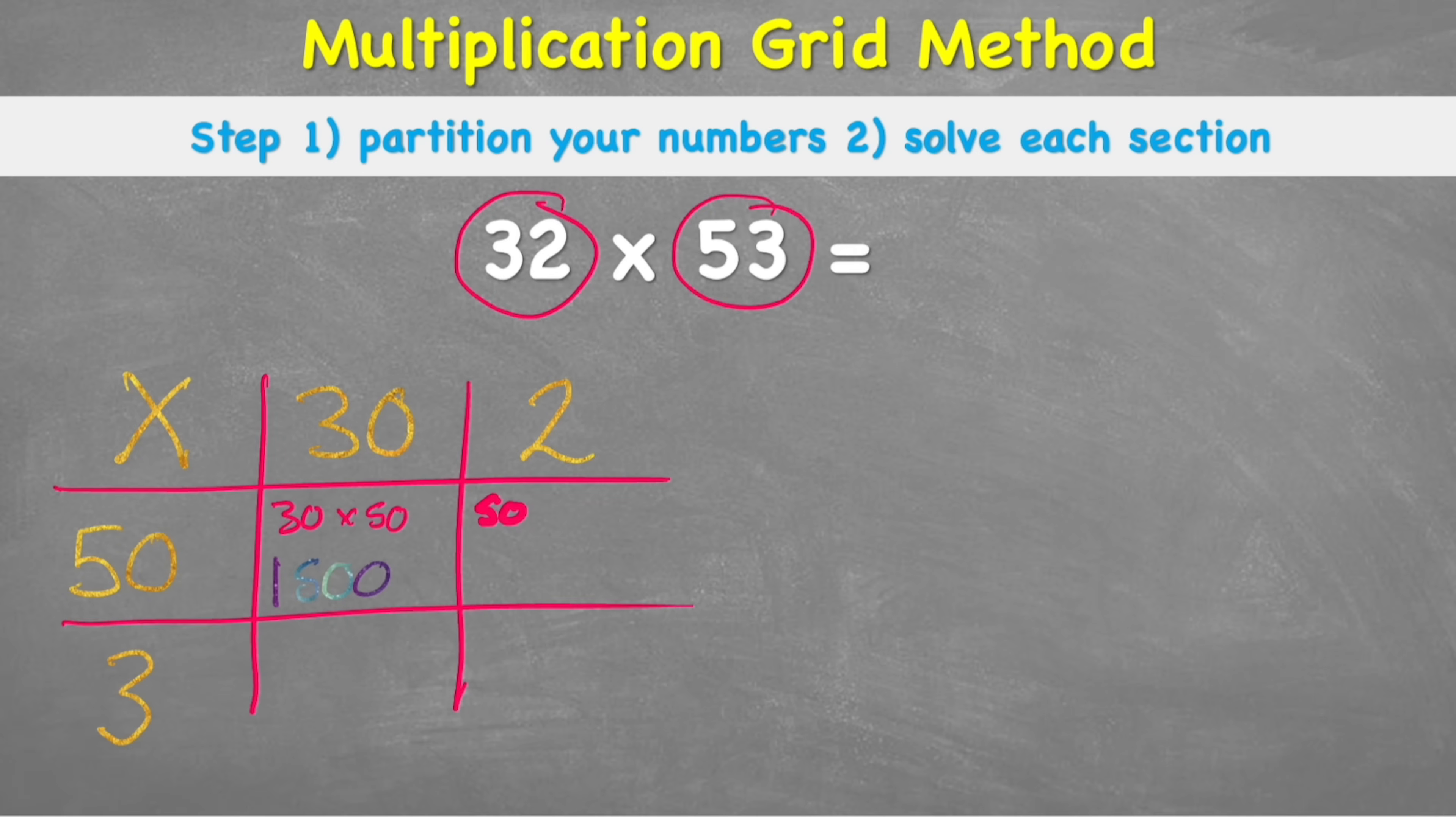Okay, second question, which is 50 times 2. And again, I imagine sometimes 50 times 2 can be quite hard to work out. So we can do the same trick. We can ignore the zero and do 5 times 2, which equals 10. And then put back our zero, so we get 100. So my answer to 50 times 2 is 100.